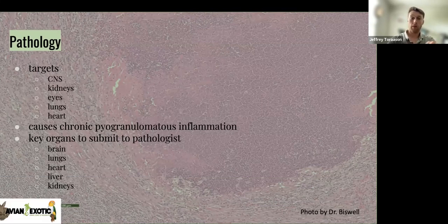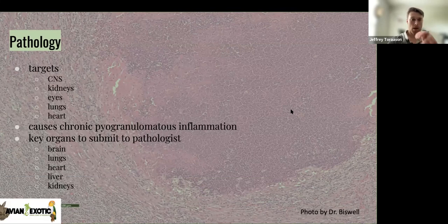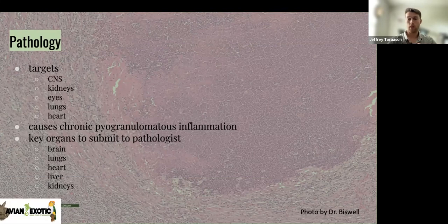What are we going to want to send to the pathologist? Brain, lungs, heart, liver, and kidneys are going to be the big things we want to send. Those will give the pathologist the best tools they need to tell you for sure if this is E. cuniculi.